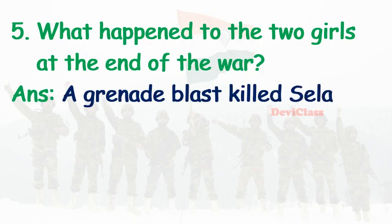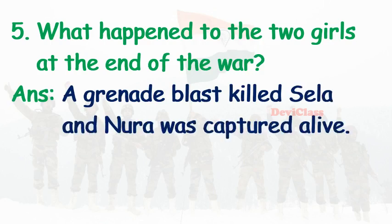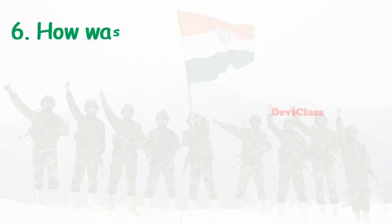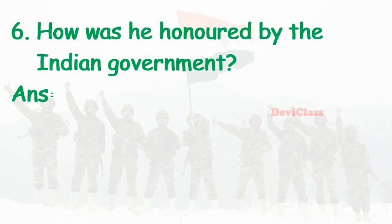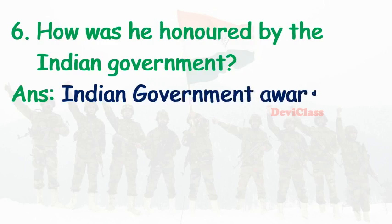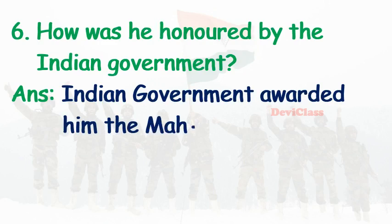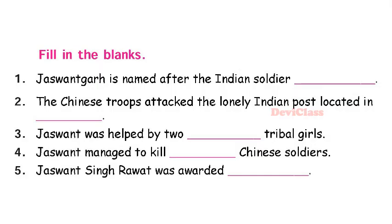A grenade blast killed Shela, and Noora was captured alive. Sixth question: how was he honored by the Indian government? Answer: The Indian government awarded him the Maha Vir Chakra. Next, fill in the blanks. First: Jaswant Kaur is named after the Indian soldier Jaswant Singh Rawat. Second: the Chinese troops attacked the lonely Indian force located in Navranang.